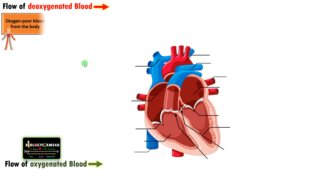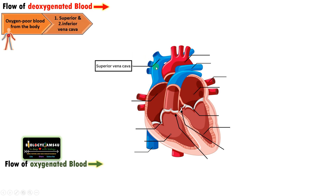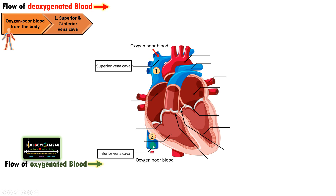Oxygen-poor blood from the body flows into the superior and inferior vena cava. Blood flows into the superior vena cava from the upper part of the body, and from the lower part of the body, blood enters through the inferior vena cava. These carry oxygen-poor blood.